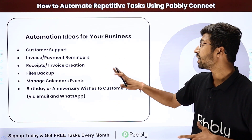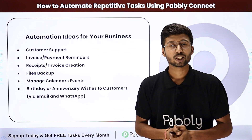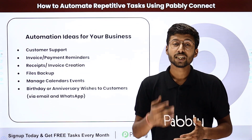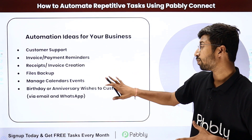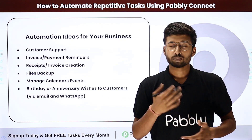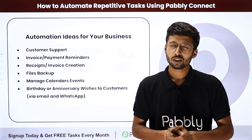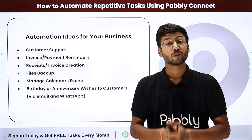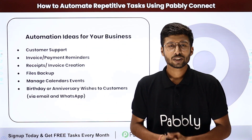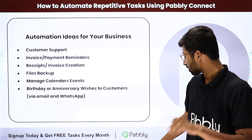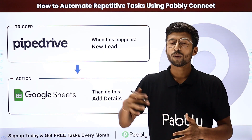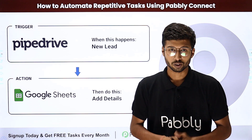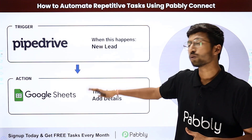The next use case is managing calendar events. If you use an online calendar or event management tool, you can get alerts about your upcoming events using Pabbly Connect. The last use case for this video is birthday or anniversary wishes for your customers, which can increase personal touch and business relationships. You can set up a complete automation to send birthday wishes automatically without any manual process. Now we will demonstrate the Pipedrive to Google Sheets automation, showing you how easy it is to set up using Pabbly Connect — with no coding or programming knowledge required.